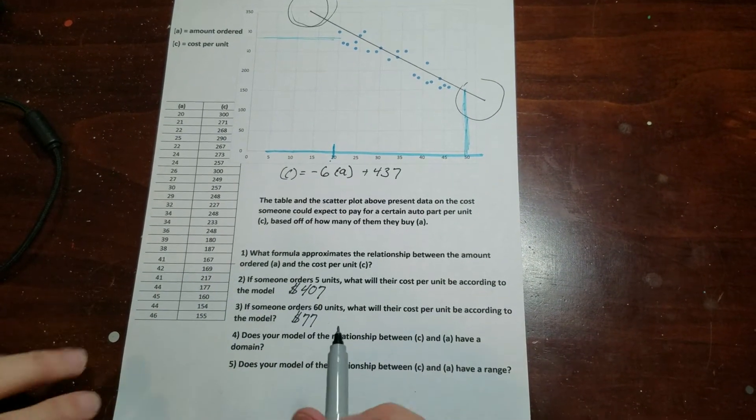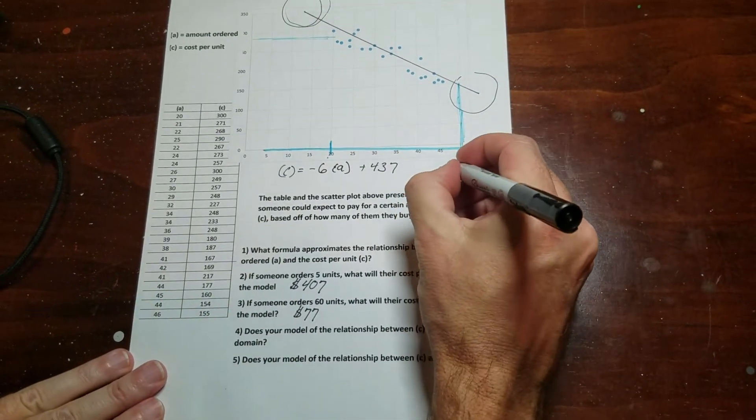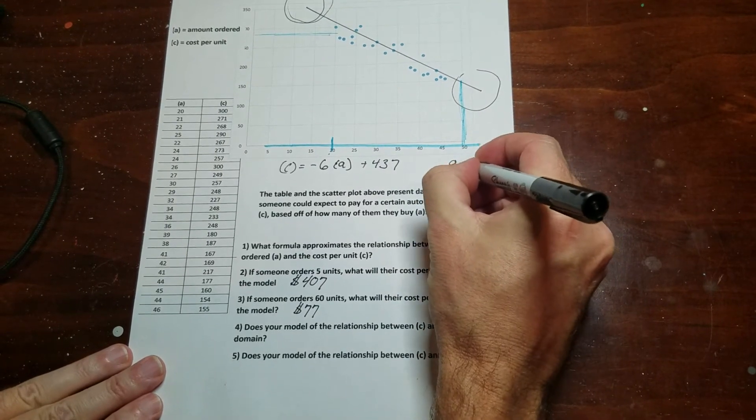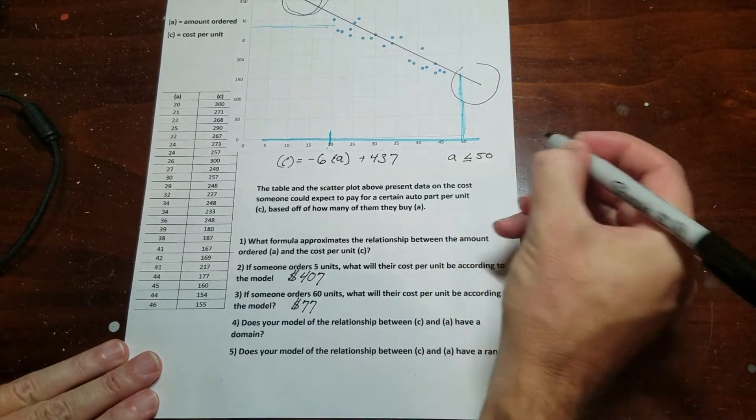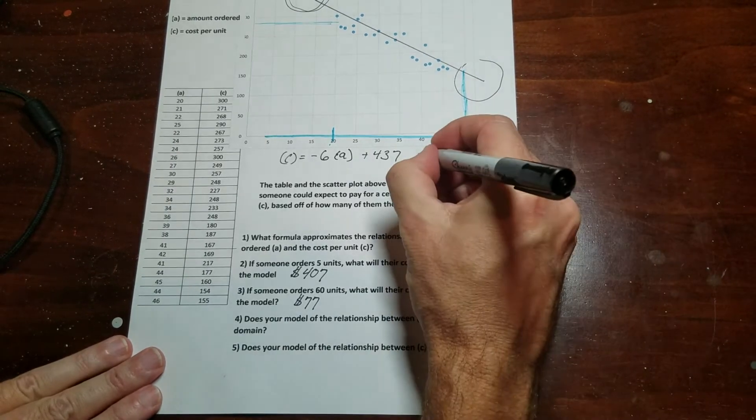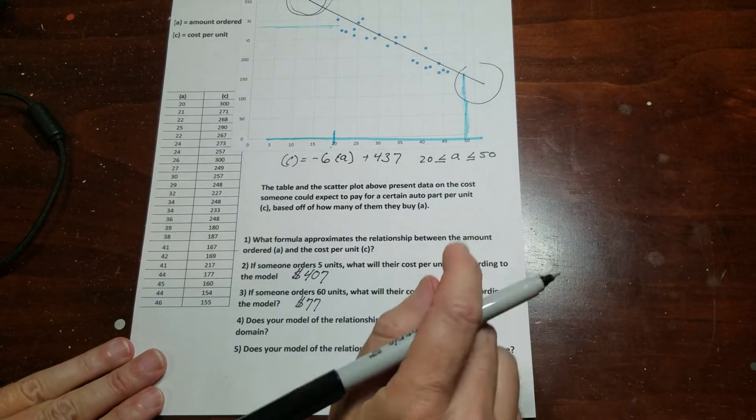And just like a compound inequality, you can say that the A is between 50 on the high end and 20 on the low end. So that's my domain.